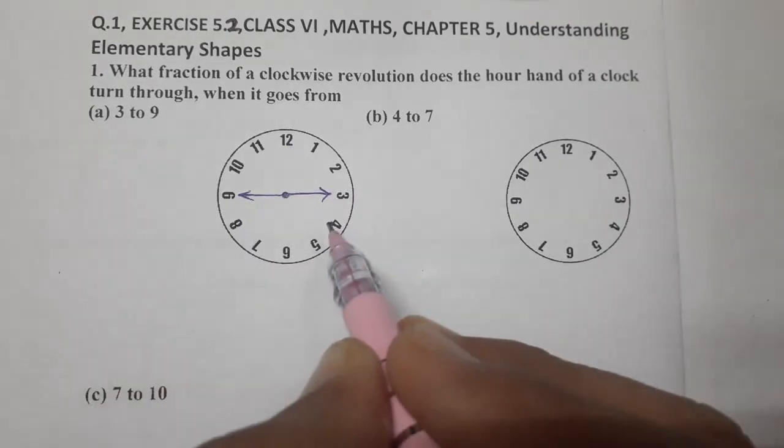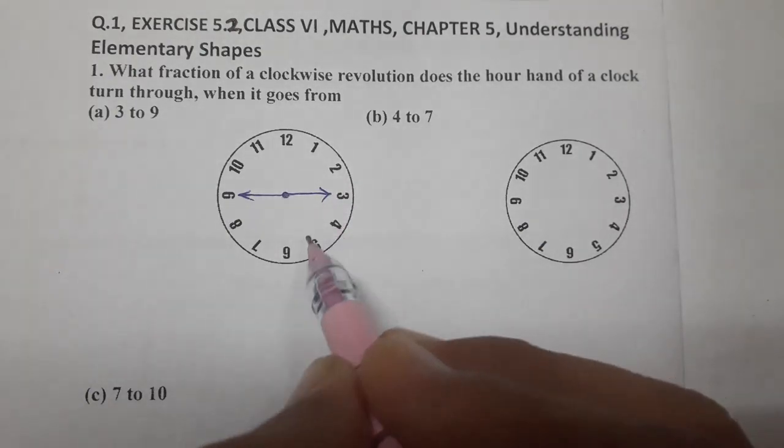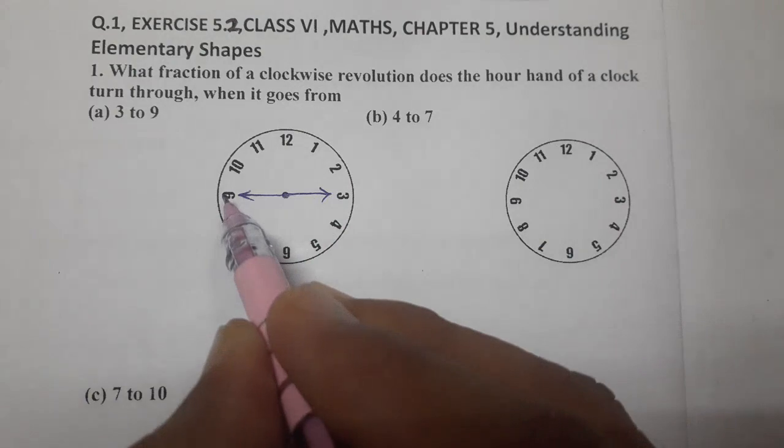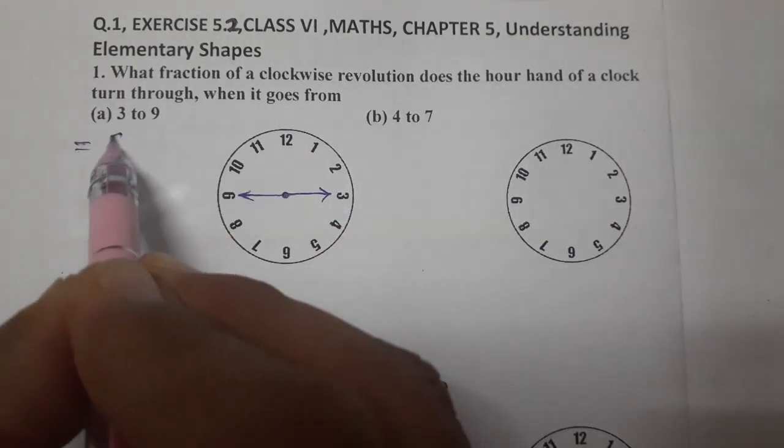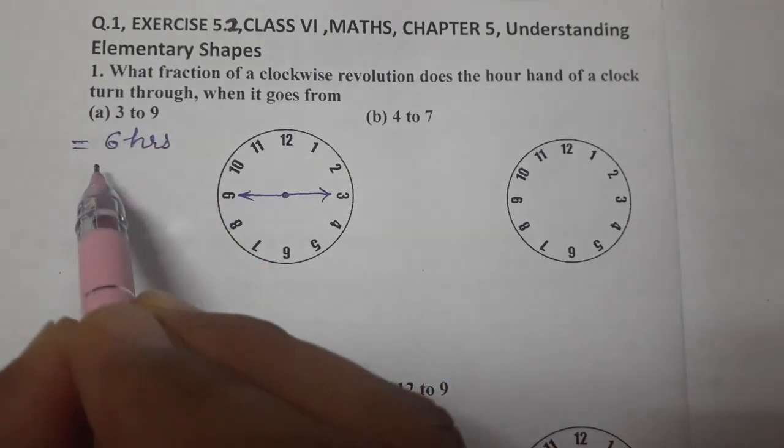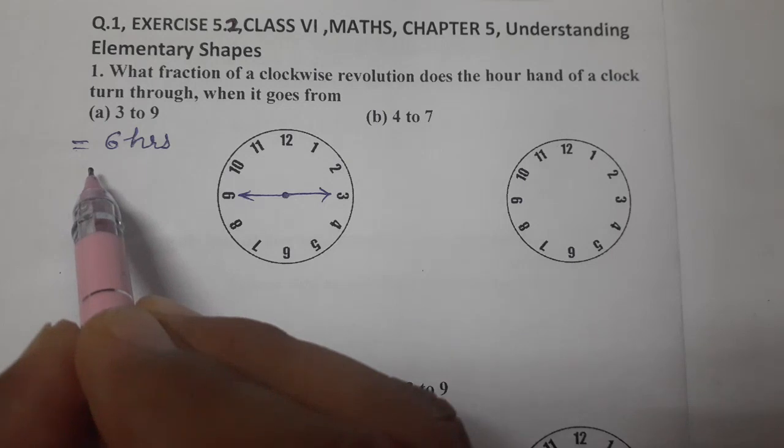Now, how many hours are there between 3 to 9? 1, 2, 3, 4, 5, 6. 6 hours. 3 to 9, 6 hours are there. 6 hours means half of a revolution, 2 right angles.